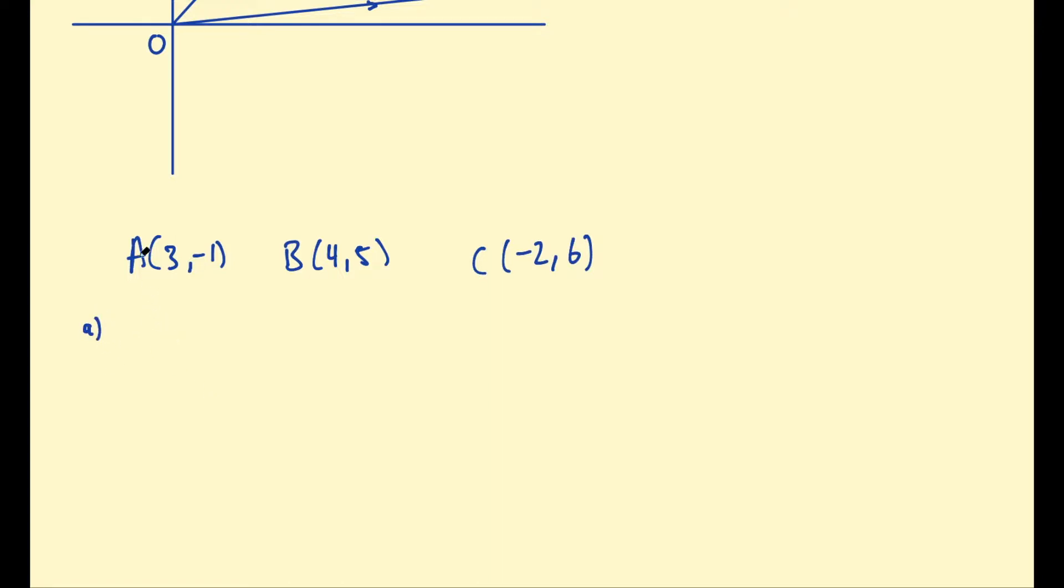So the position vectors are pretty straightforward. The position vector of A is simply OA, which you can write as a column vector—you've gone across 3 and down 1 to represent the vector from the origin to that point A. You could also write it as 3i - j in that IJ notation we talked about in a previous video. OB would be 4i + 5j, and OC is -2i + 6j. Okay, pretty straightforward—just writing down the position vectors.